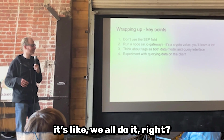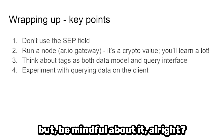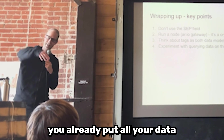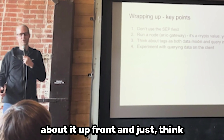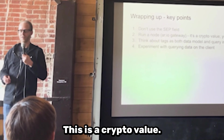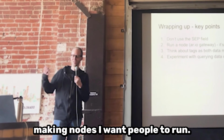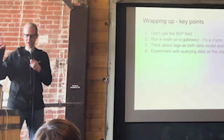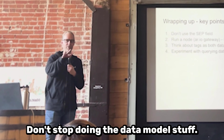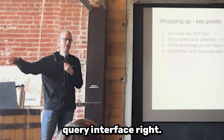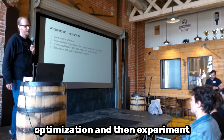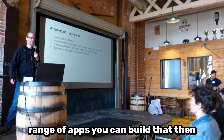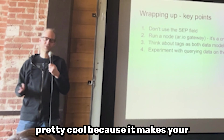Wrapping up — key points. Don't use the SCP field, or do — we all do it. But be mindful: some abstractions are leaky. Your query execution doesn't matter until it does, and then you're stuck with whatever model you have. So put a little time into thinking about it up front. Run a node — run an Arweave node, run an RIO node. You need to have agency over your infrastructure. Think about tags as both a data model and a query interface. Don't stop doing the data model stuff, but keep the query interface optimization in mind. Experiment with querying data on the client — it's a really interesting paradigm, and there's a whole range of apps you can build that don't require a GraphQL API endpoint at all, making your application even more autonomous.